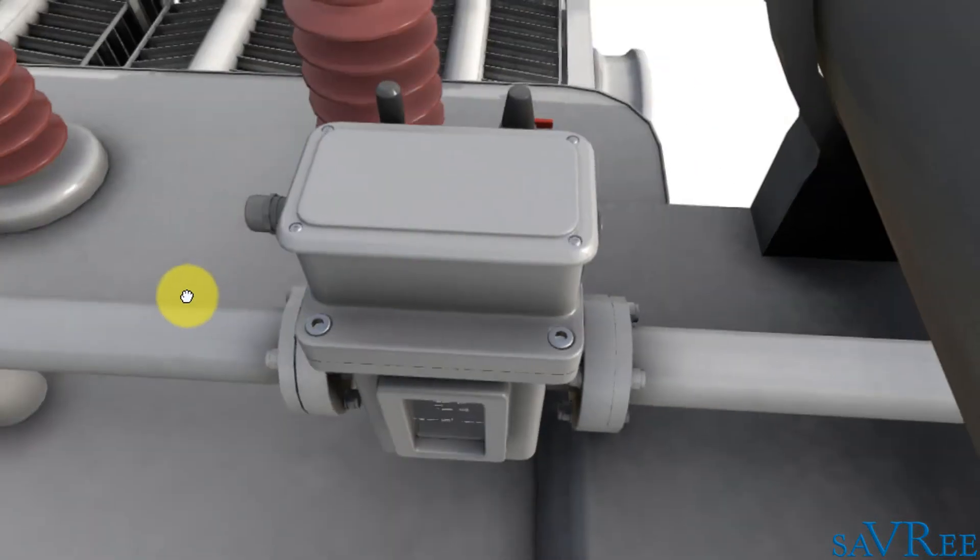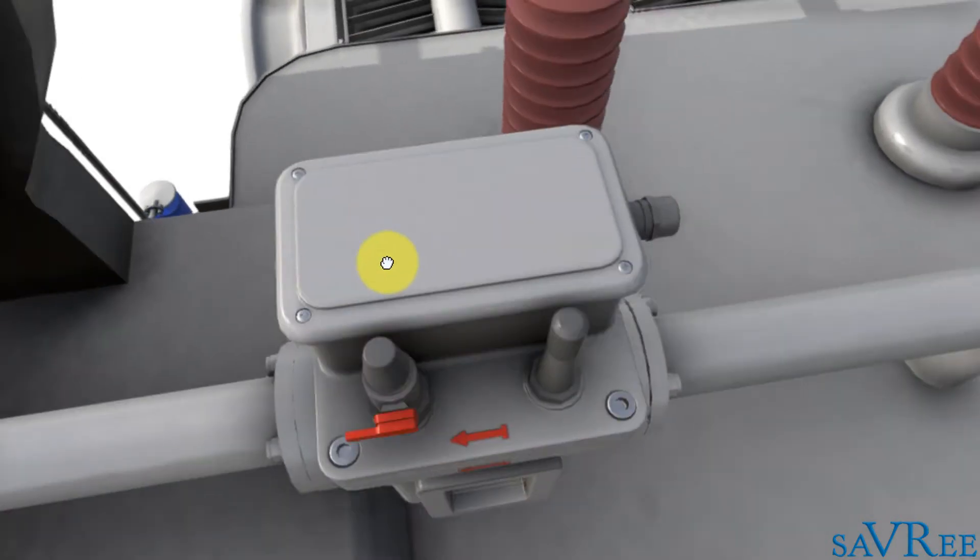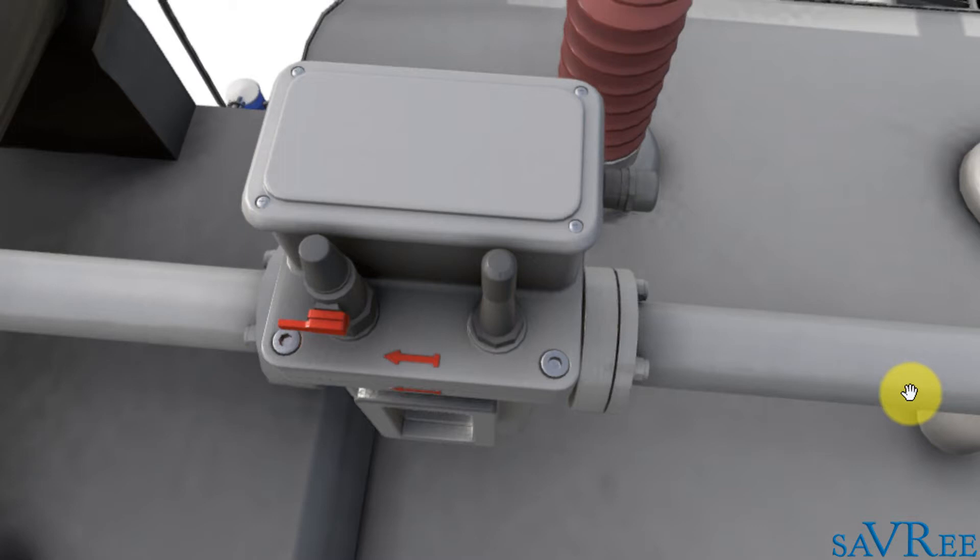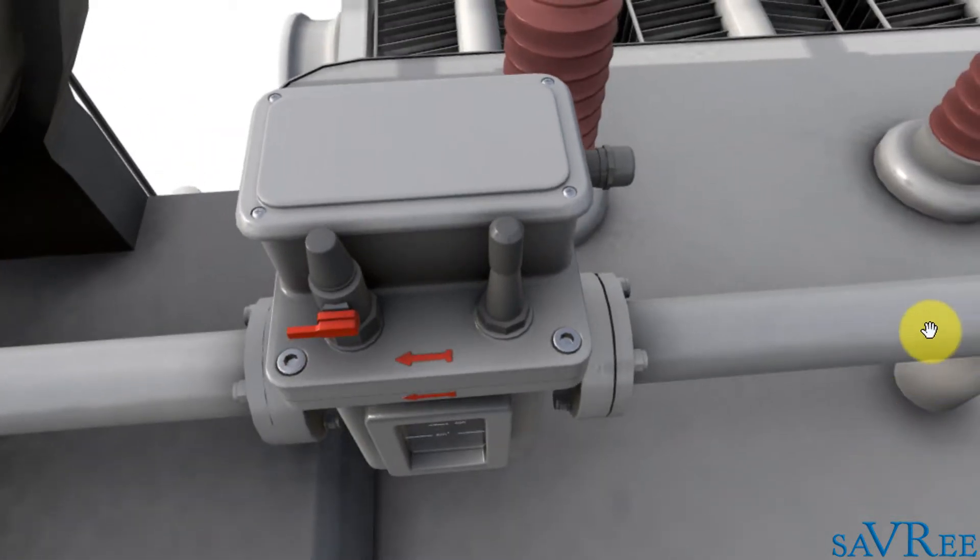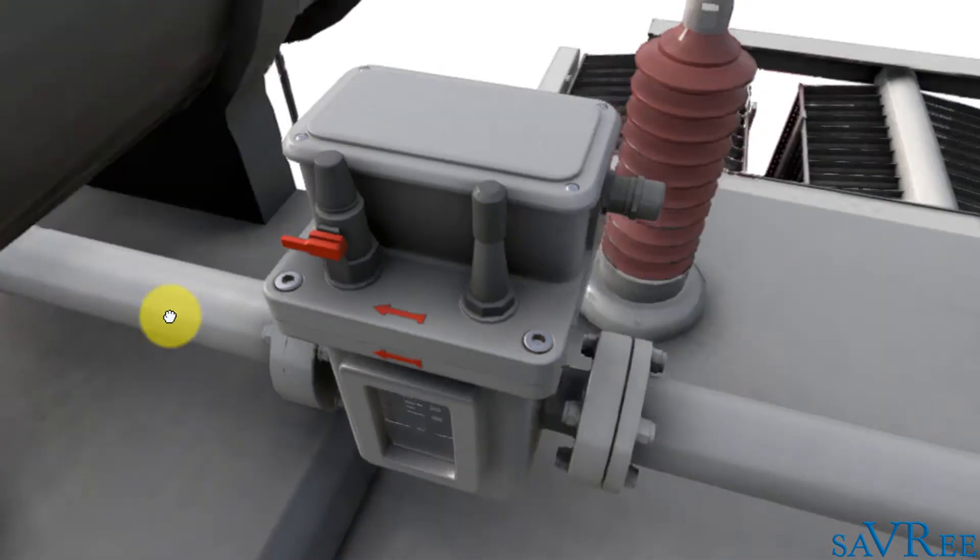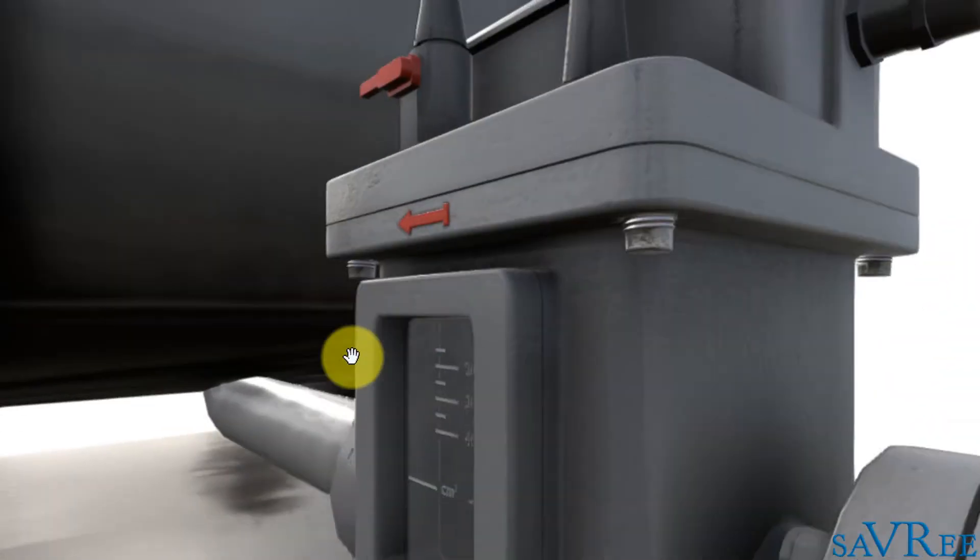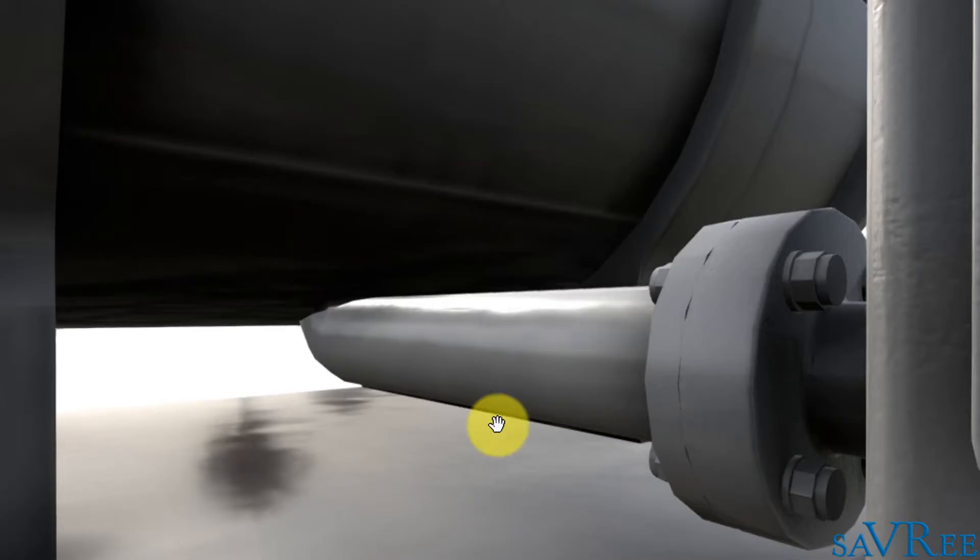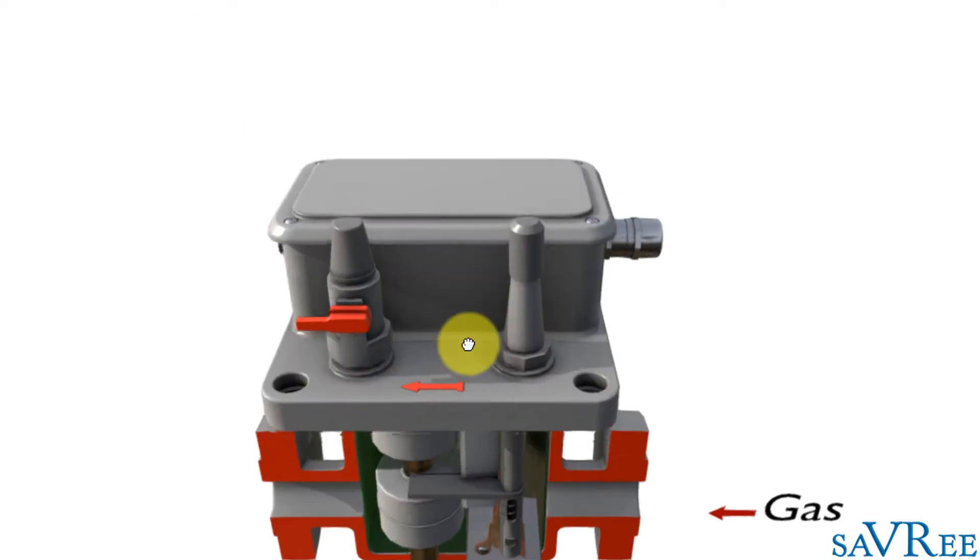Let's have a look how that looks in real life. We switch back to our transformer model again. So it's coming out of the main tank, along there and going into the base of the conservator tank and into the conservator tank.